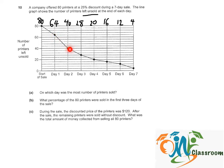That means the most number of printers were sold on day 2. So for part A, the answer would be day 2.